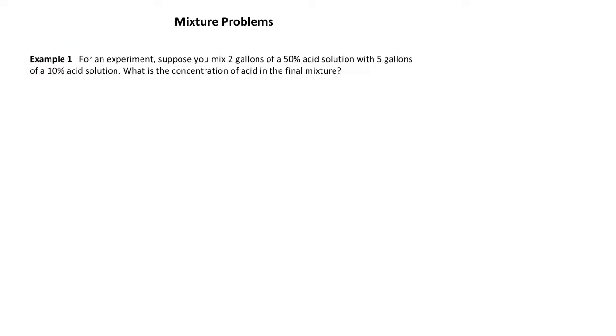For example one, let's suppose for an experiment, you have two gallons of something that is 50% acid and then there's five gallons of something that is 10% acid. If you were to pour these two things together, what is the concentration of acid in the final mixture? Find the final percent after you pour these into each other.